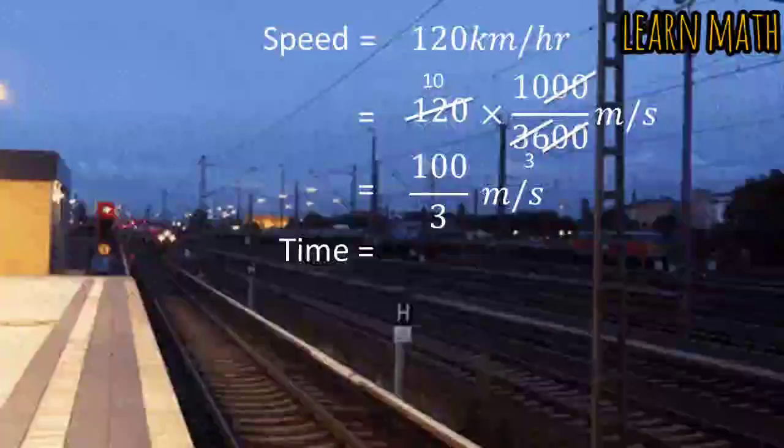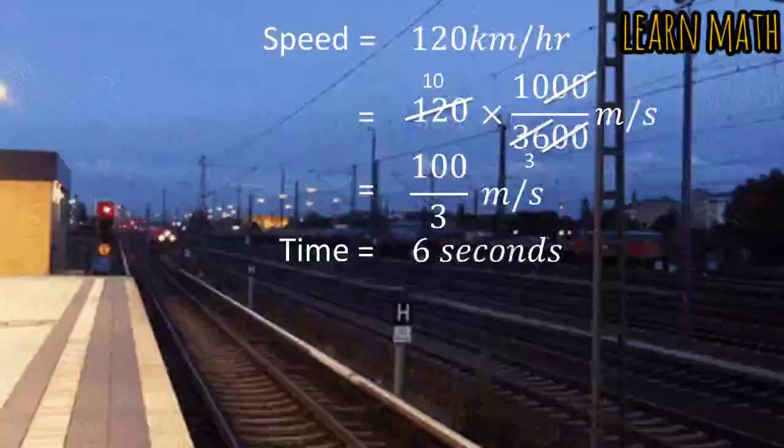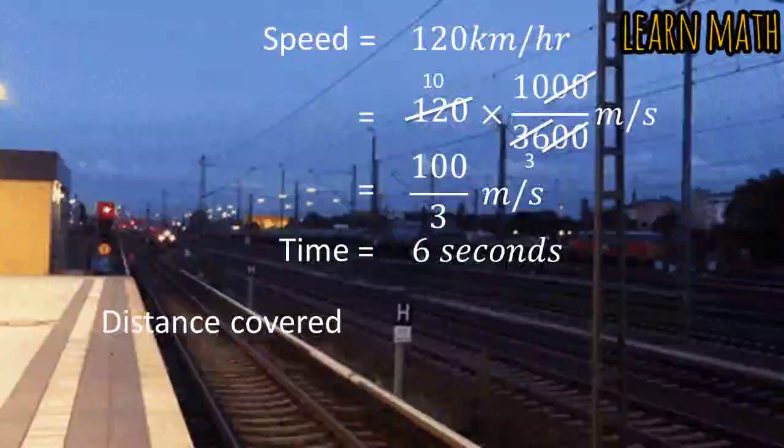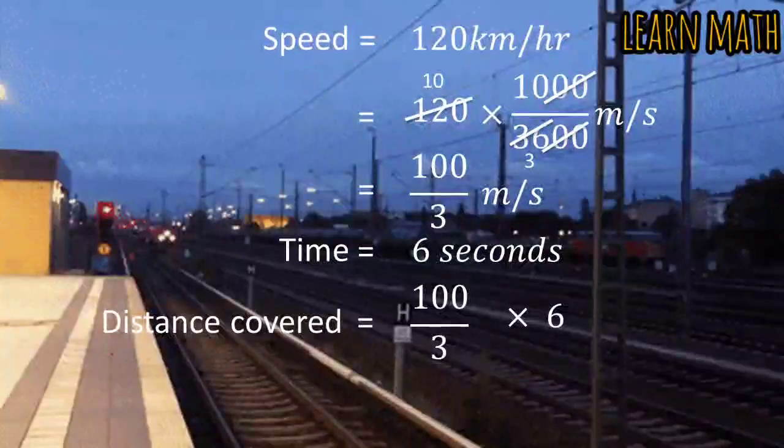Now, the time in which the train crosses the pole is 6 seconds. So, the distance covered will be 100 by 3 multiplied by 6 seconds.